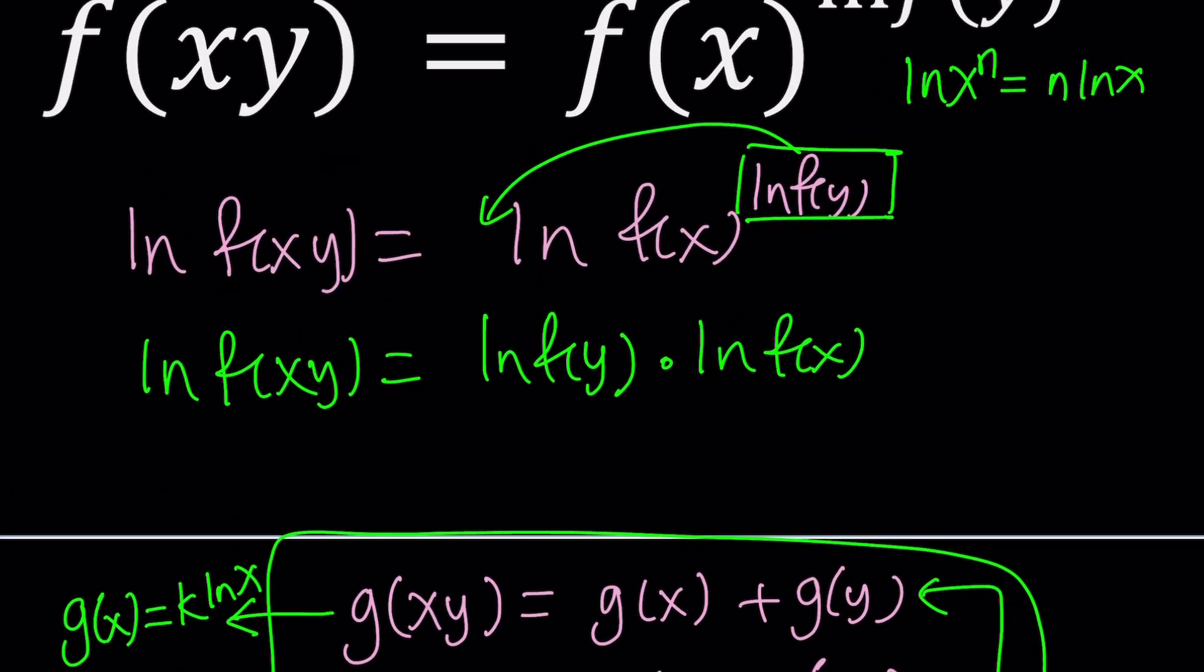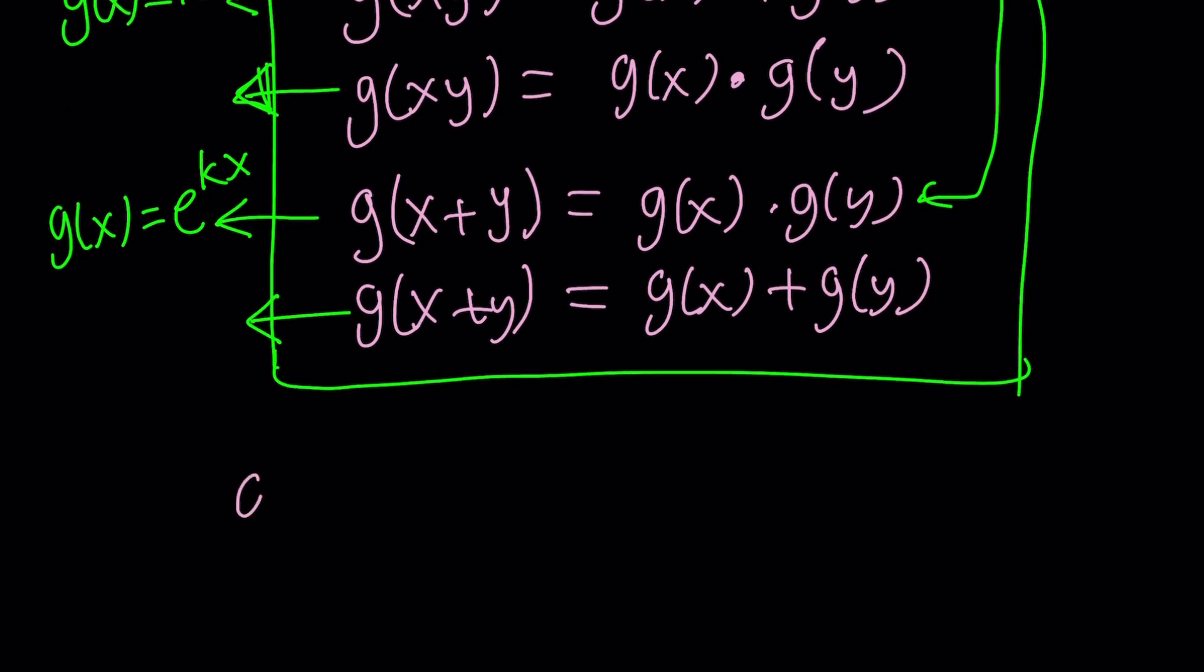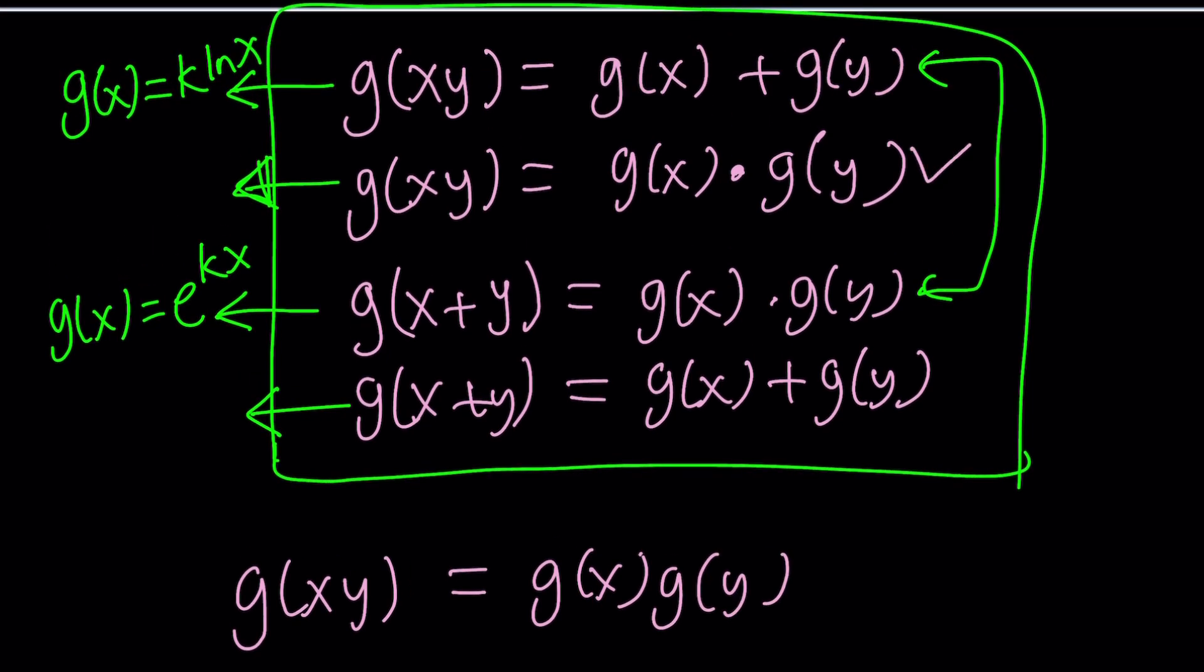So here, I'm going to call this g of x. Look at this. This is beautiful. Once I call that g of x, automatically this becomes g of y and this becomes g of xy. Of course, that's an implication, direct implication. So we have a nicer equation, g of xy equals g of x times g of y. Beautiful. And that brings us to the second category.